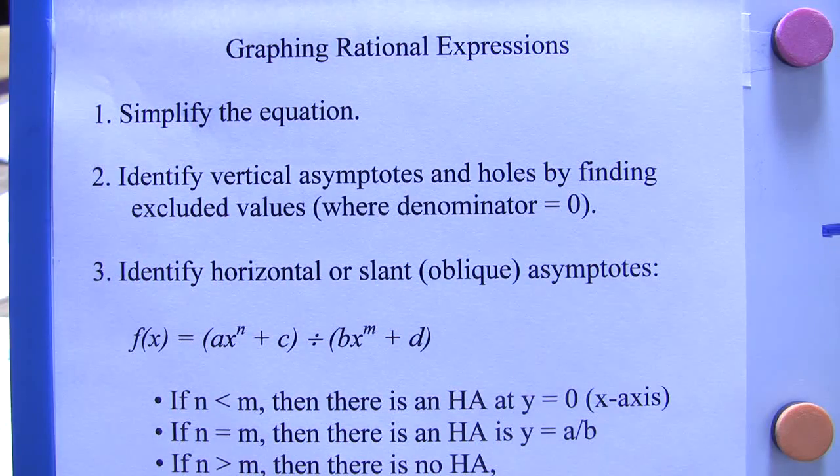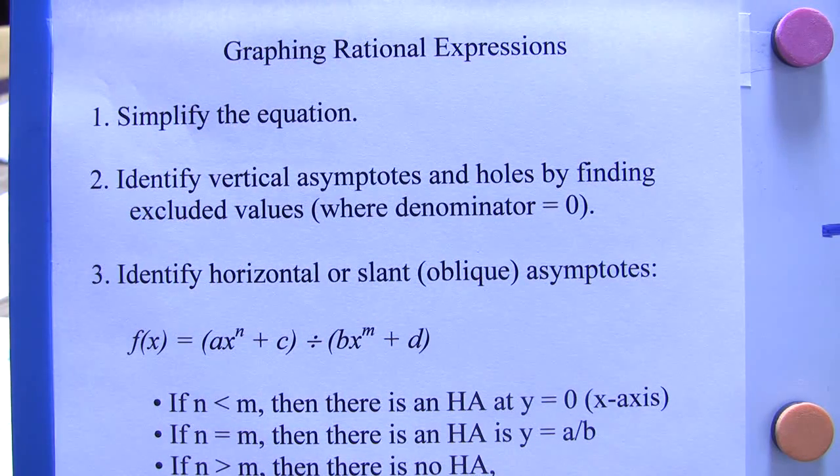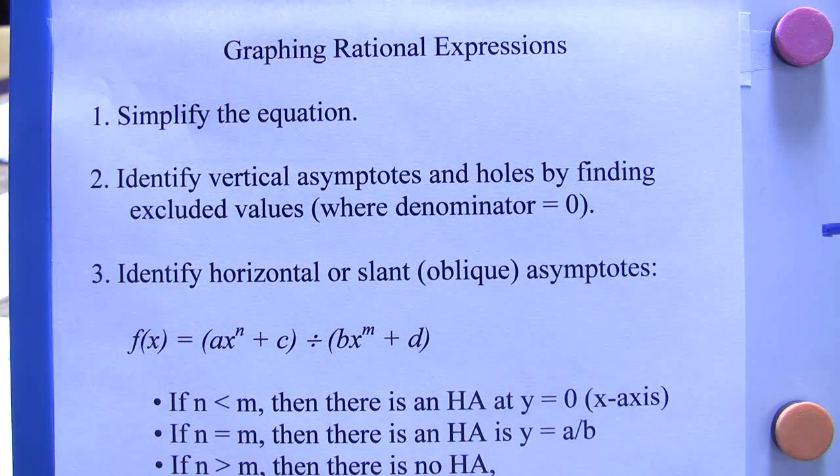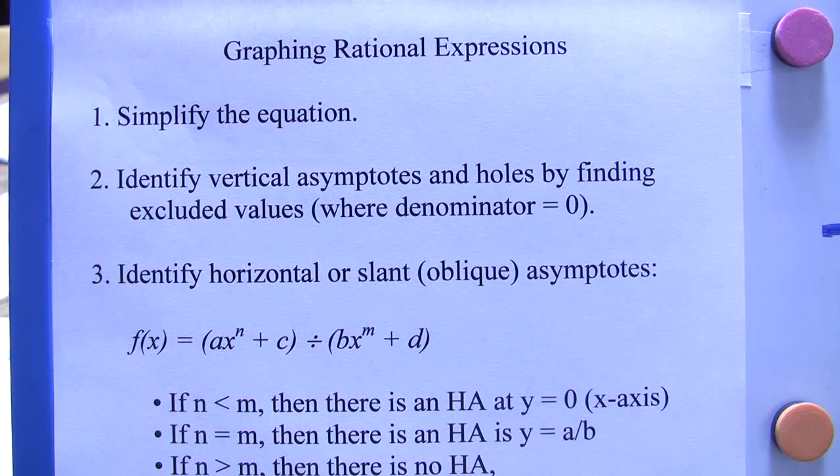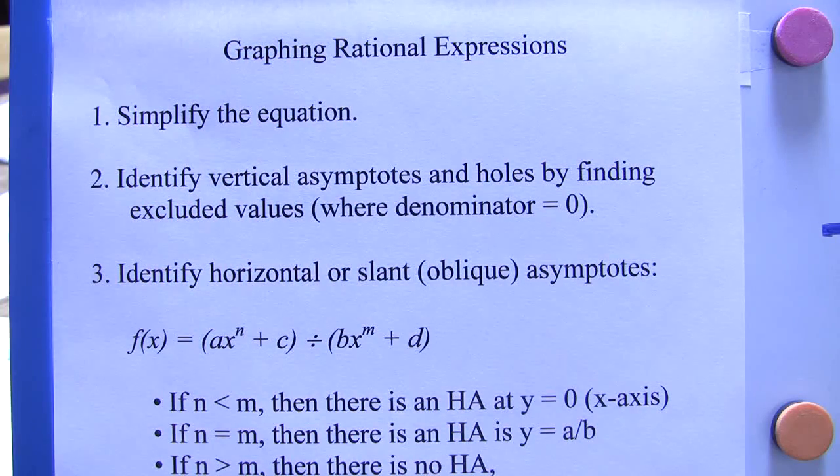Then you can identify the horizontal asymptotes or the slant asymptotes. Slant asymptotes are sometimes called oblique asymptotes. In the graph of this function, you will have either horizontal asymptotes or slant asymptotes, but you will not have both. And you may have neither.